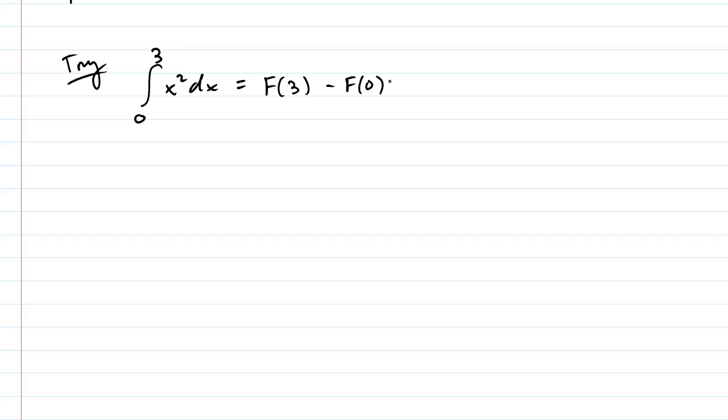This is going to be the same as f(3) minus f(0), so pause and try to figure it out. The antiderivative of x squared is x cubed with a 1/3 in front. This is going to be 1/3 times 3 cubed minus 1/3 times 0 cubed. This disappears because it's 0. 3 cubed is 9 times 3 which is 27 all over 3. 27 over 3 is just 9.